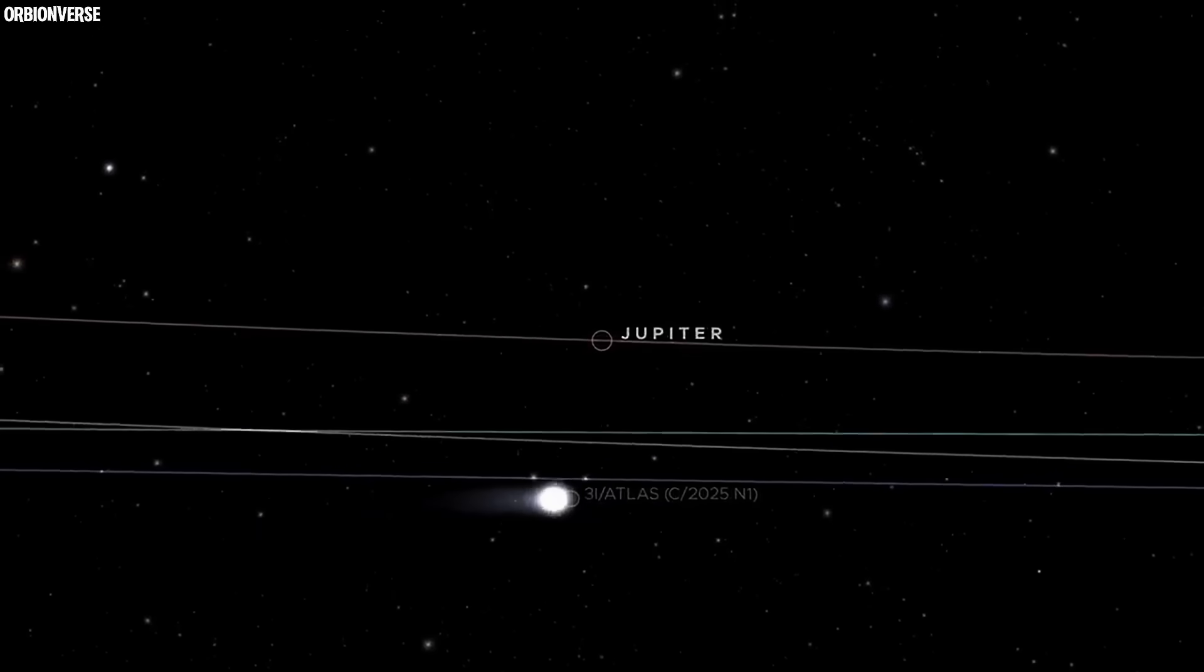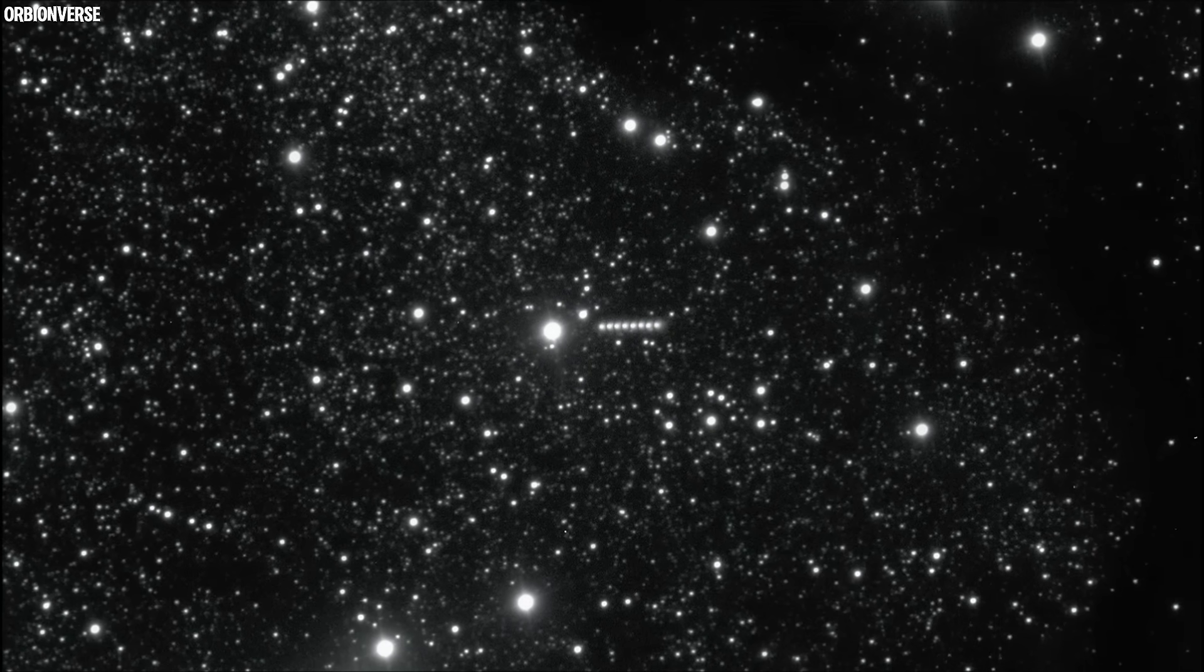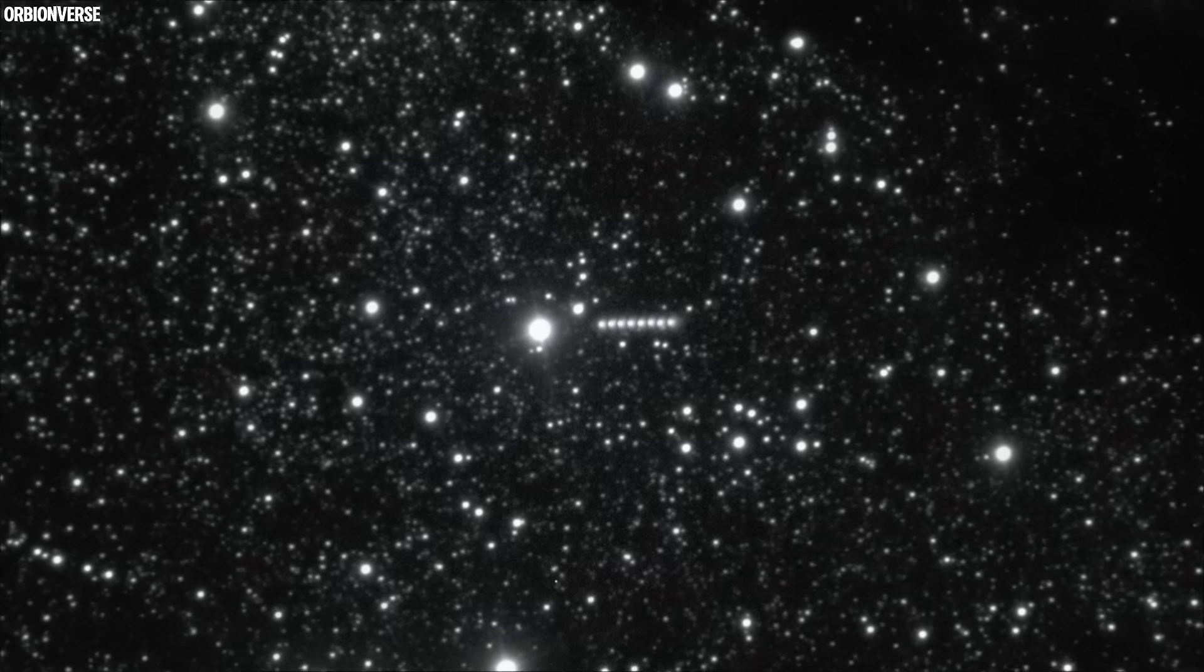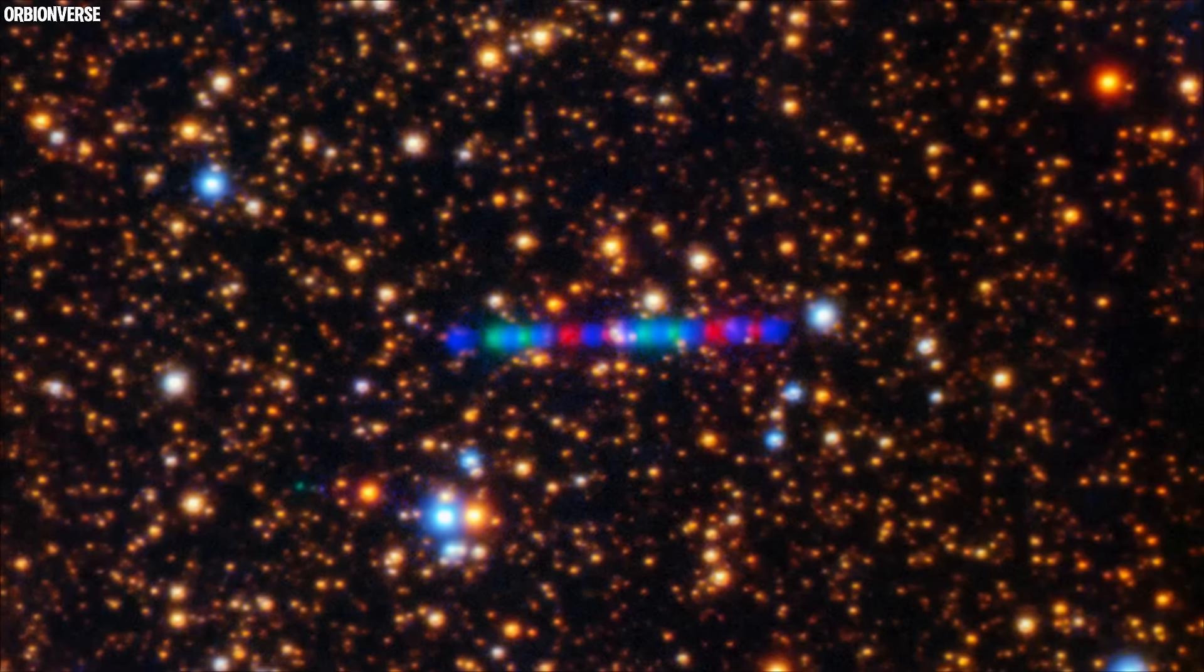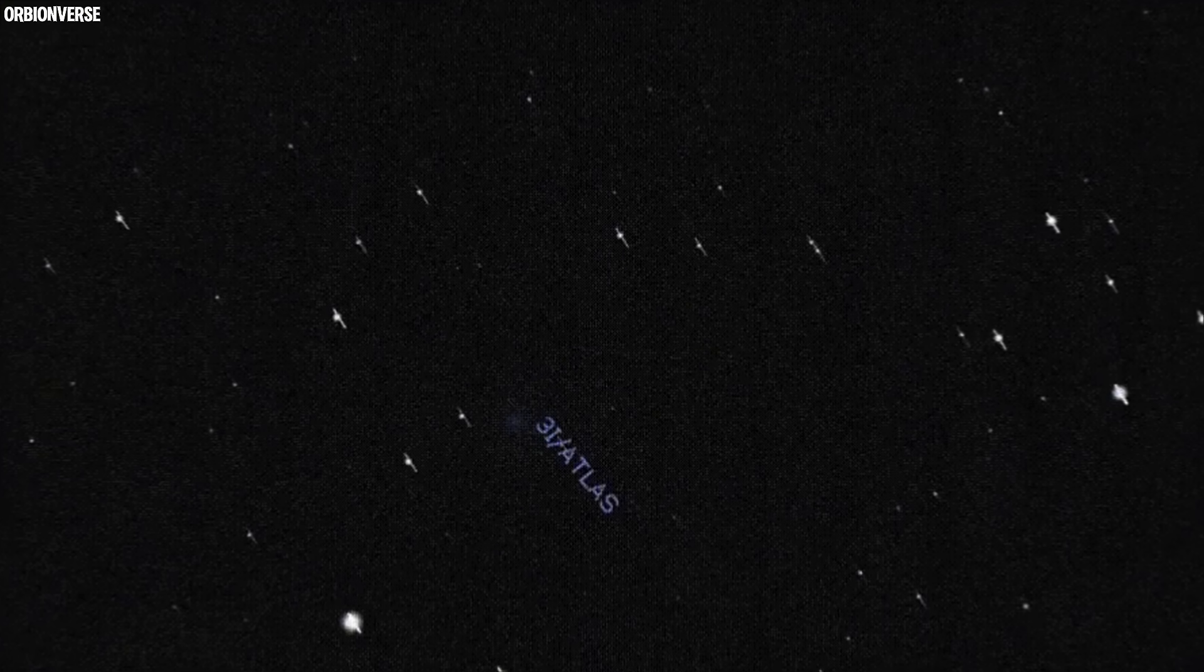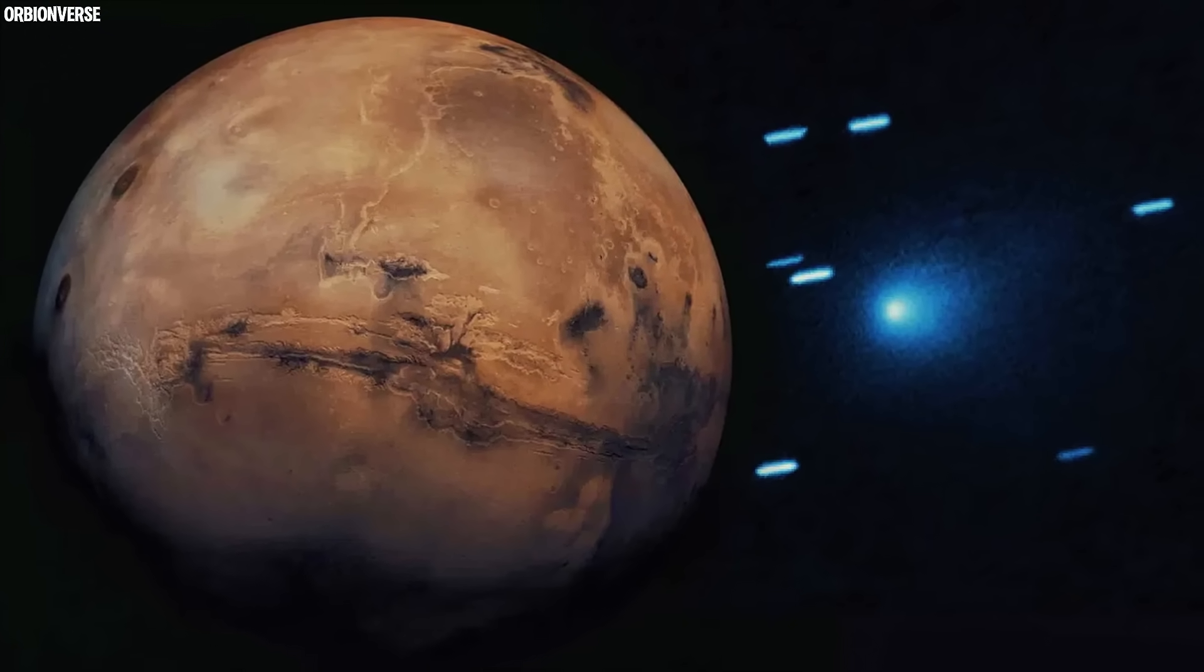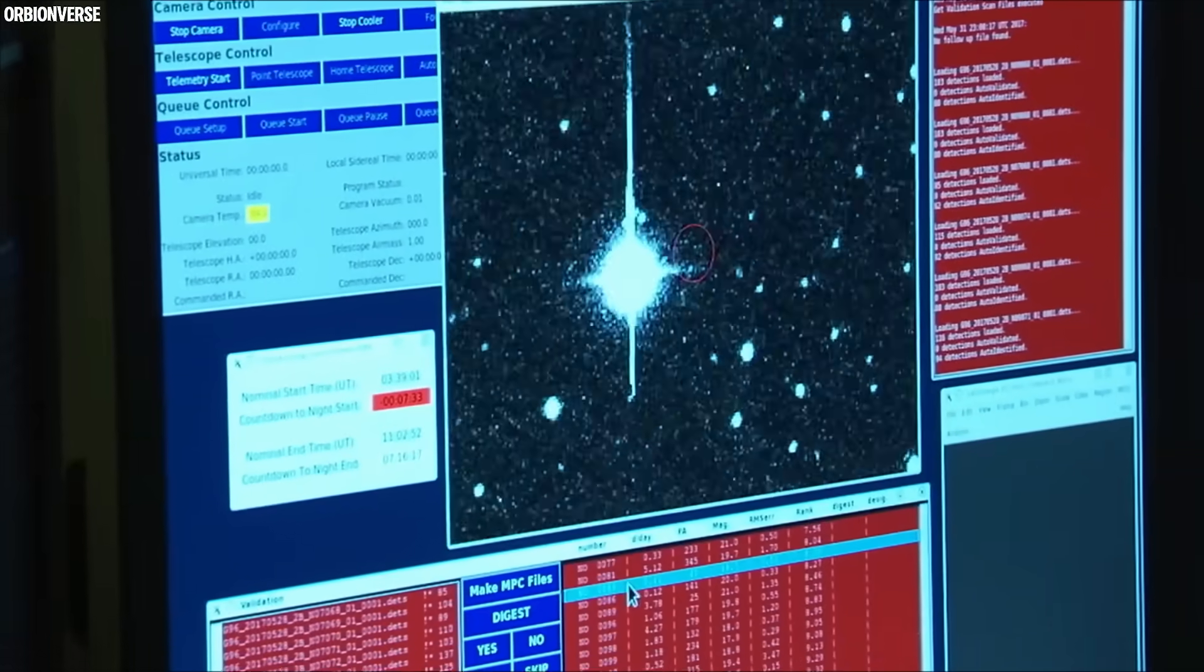Now, here's where things get strange. The actual estimated size of 3I/ATLAS, even using the most generous upper limit, is around 46 kilometers wide. That should make the explanation clear. It's an imaging artifact, the kind that happens when a fast-moving object is photographed in multiple exposures. And yet, the human brain resists simple explanations. We see a shape where none should exist, and our curiosity fills in the gaps.